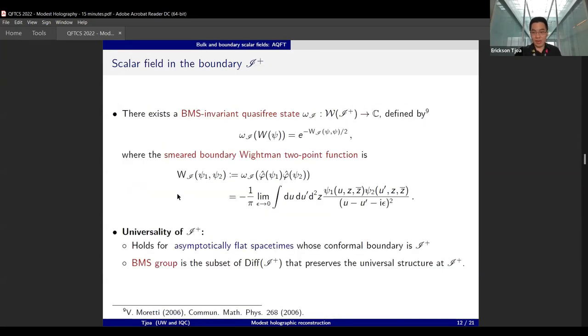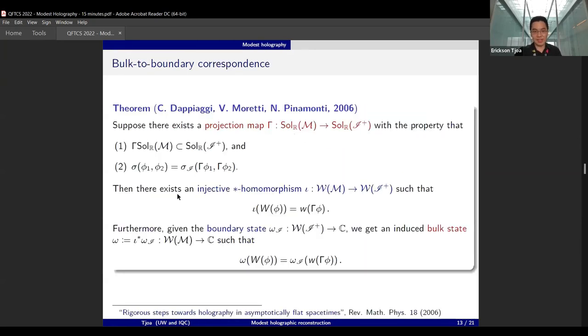With this, we are now ready to say something holographically. It is a celebrated result by Claudio Dappiaggi, who was here for the past two days, Walter Moretti, and Nicola Pinamonti in 2006 that says: if you can find a projection map between the space of solutions—that means you send your solutions from the bulk to the boundary so that the entire solution lies in the boundary—and the symplectic two-forms are compatible, then you can actually embed the Weyl algebra into the larger algebra at the boundary.